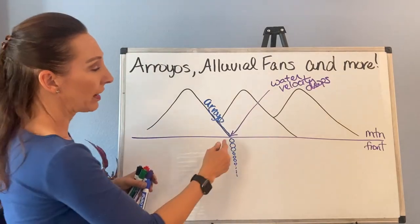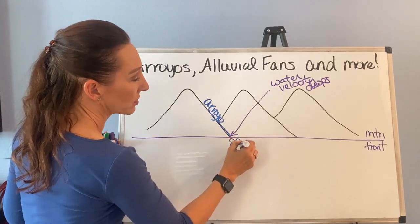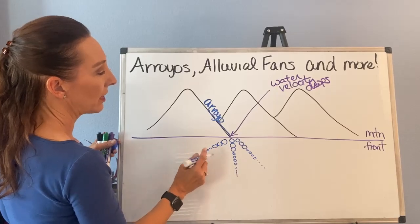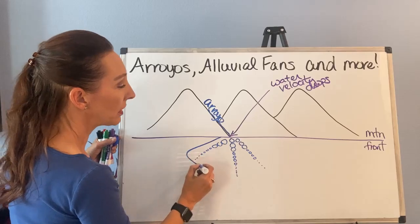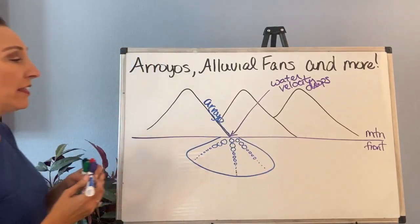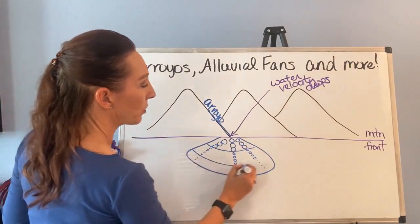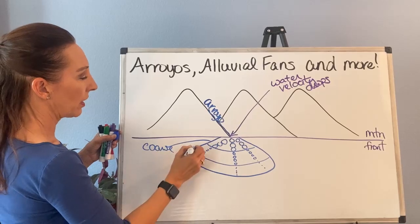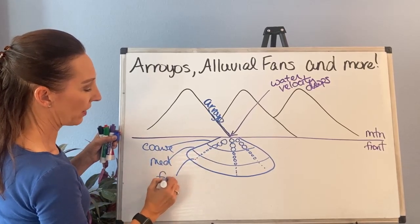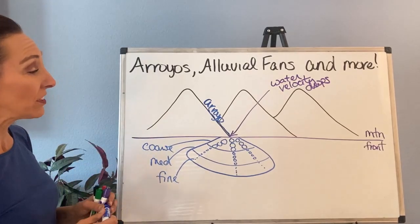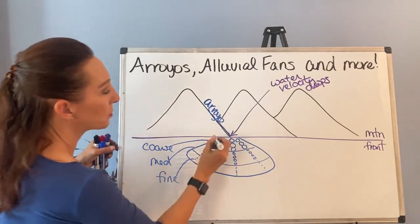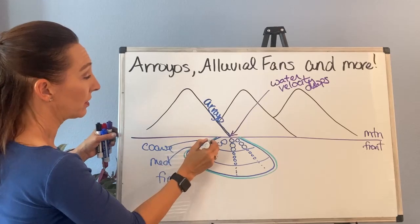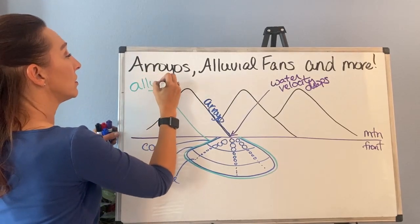Another event would come along and go off to one of the sides. As the water slows down, it drops the big, the medium, and the fine stuff. With more and more events doing the same thing, it just sweeps back and forth, and what you end up creating is a feature that tends to have three bands of material — it's really more gradational, but we put it into three: coarse, then medium grain, then fine grain. This whole feature is called an alluvial fan. I'm going to outline it in green — it's all made of material from the arroyo.